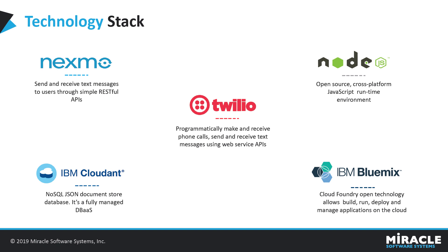Cloudant is a NoSQL, non-relational distributed database which stores data in JSON format. We use Cloudant to store policies, claim numbers, statuses, and registered user details. Finally, IBM Bluemix is a cloud platform as a service deployed by IBM. We can run and deploy our own applications on Bluemix, and Watson services are also provided as a service in Bluemix, which we can use to build our applications.